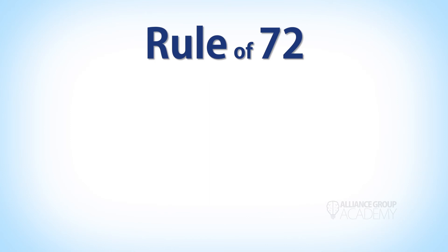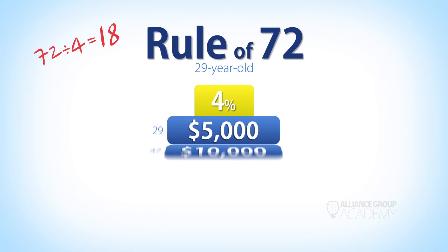Using the Rule of 72 we can easily see how small changes in interest rate can make a huge difference in our earning potential. A 29 year old earning 4% compounding interest can expect his account to double twice by the time he's 65. At 8 percent it doubles four times. At 12 percent it doubles eight times.